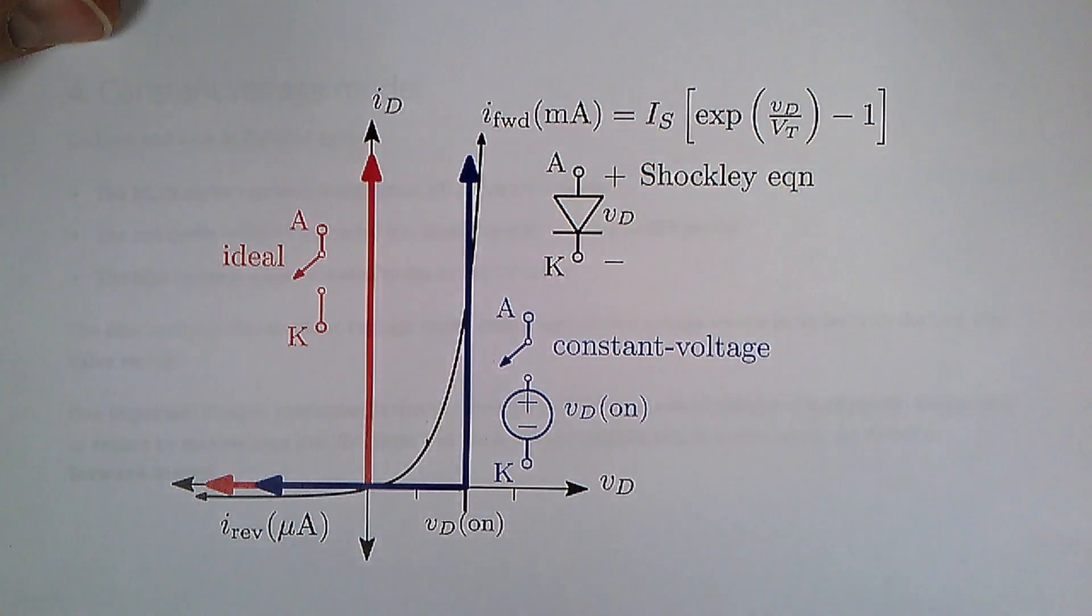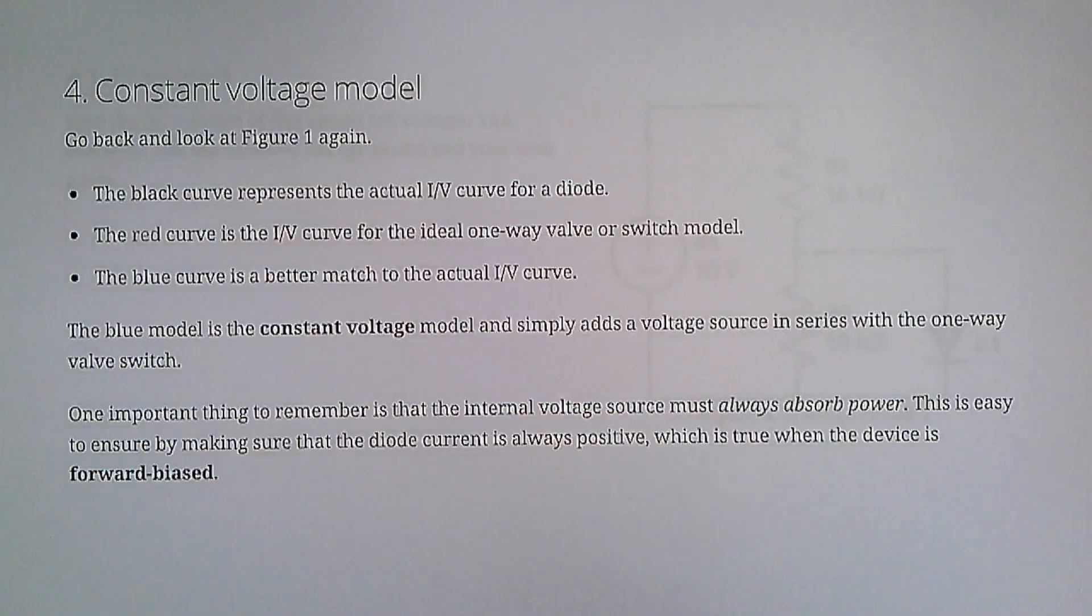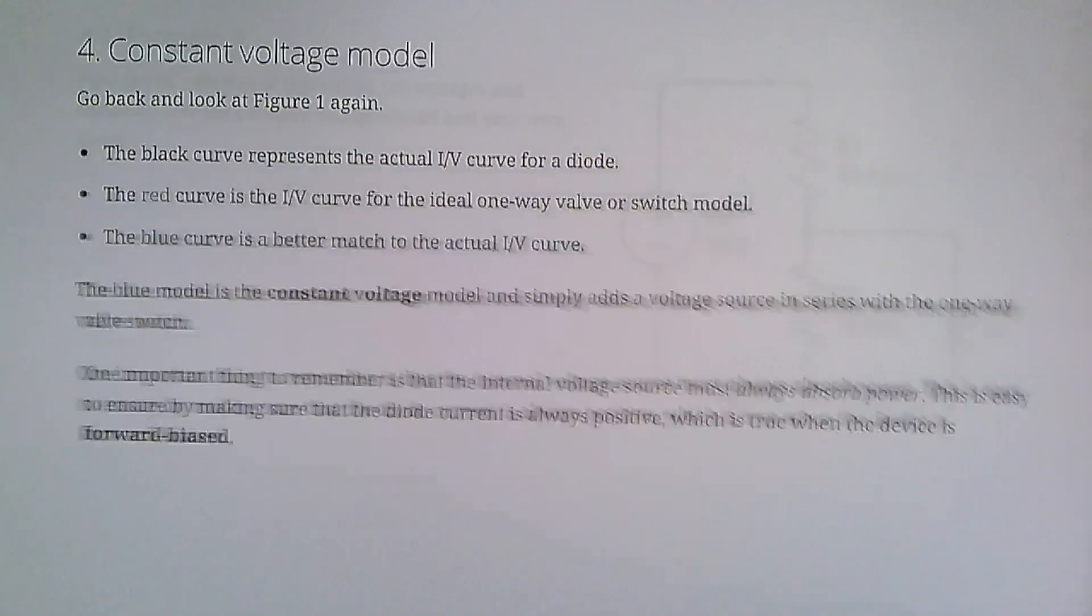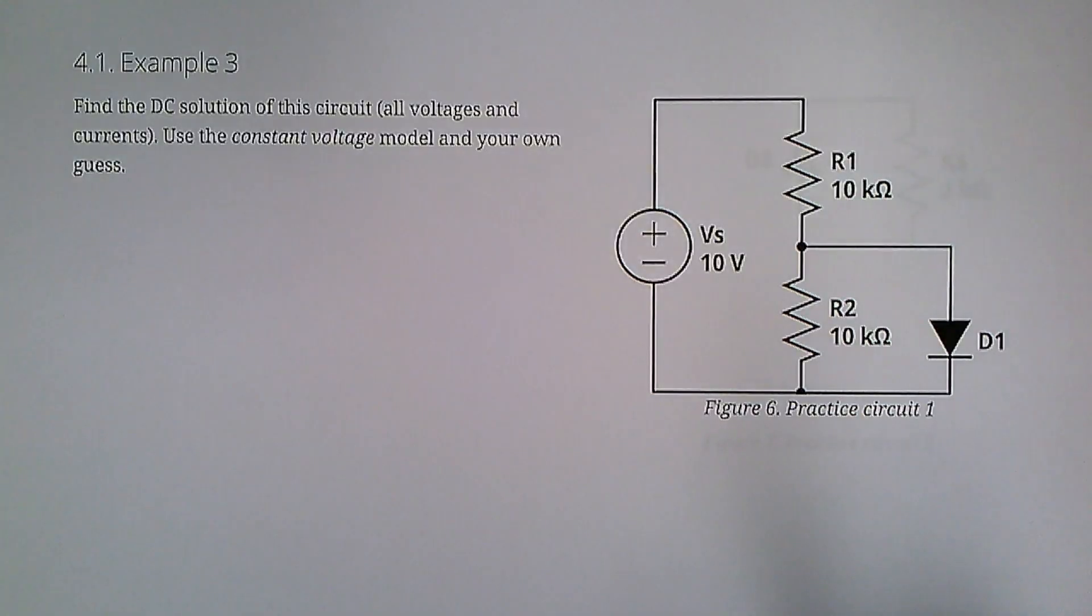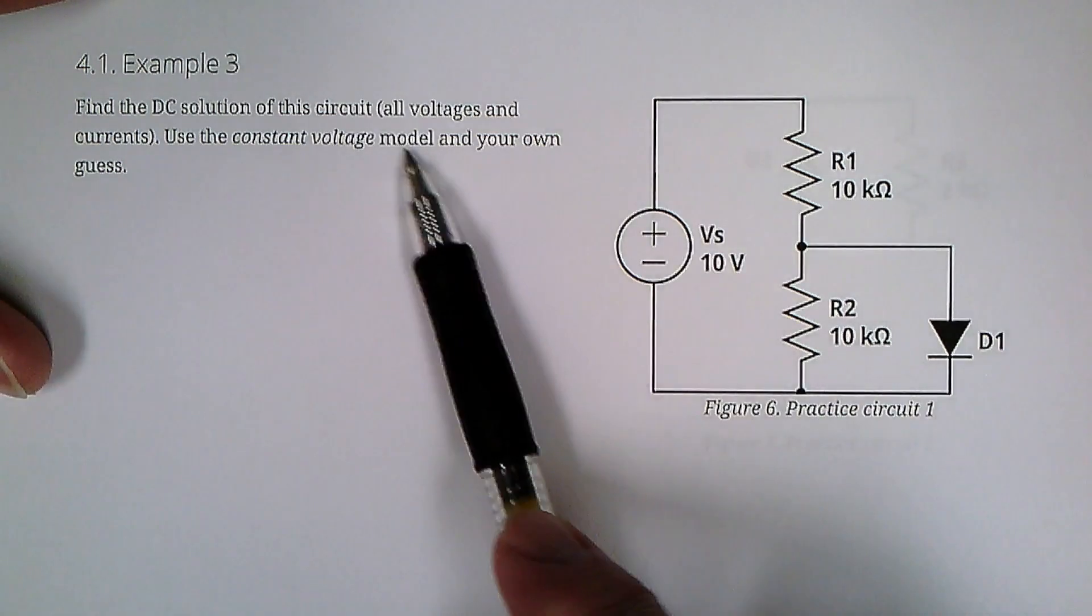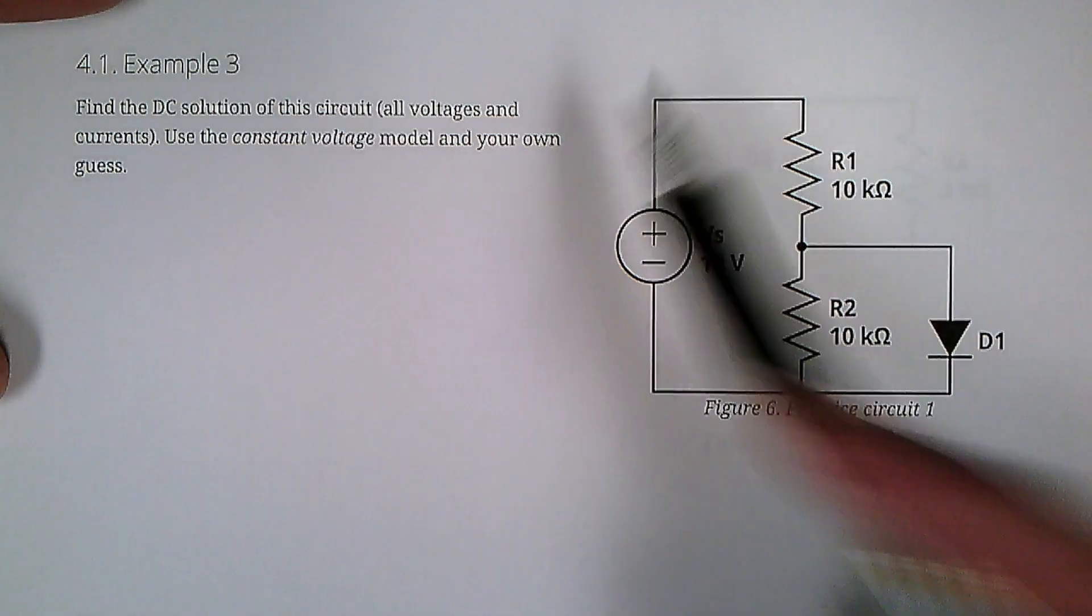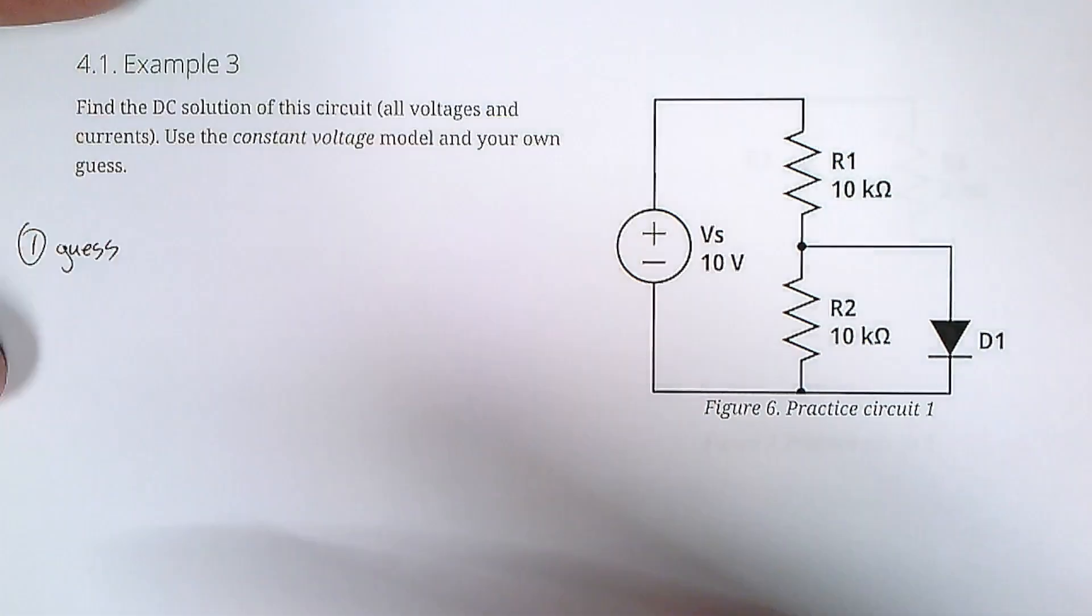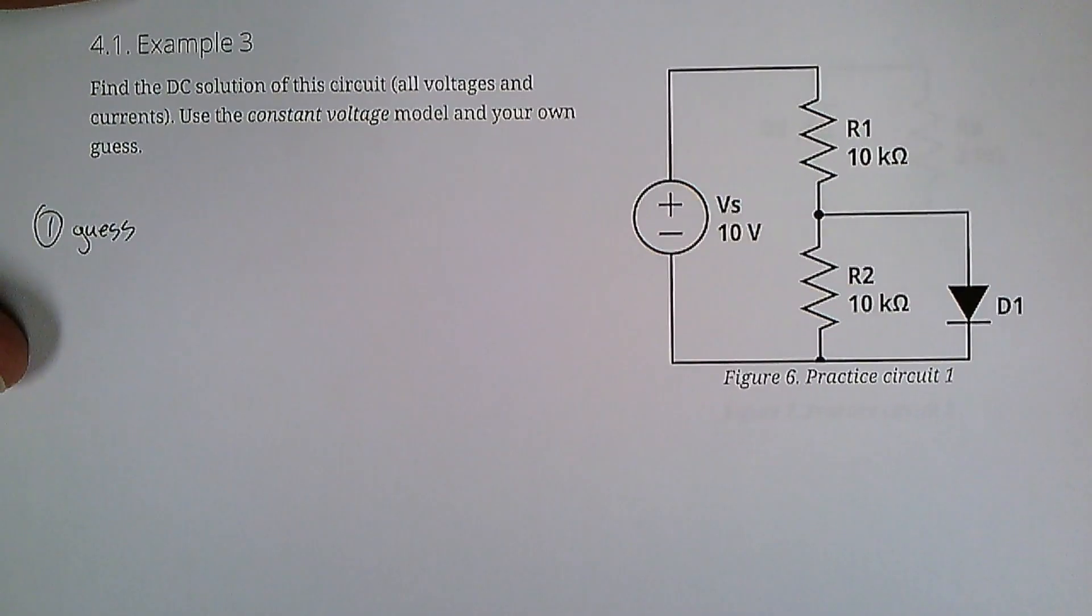So how do we analyze a circuit using the switch model? Well, the steps are the same. So we're going to use the same two circuits and proceed to analyze them. Use the constant voltage model and your own guess. So step one, guess. What are we going to guess? On or off?